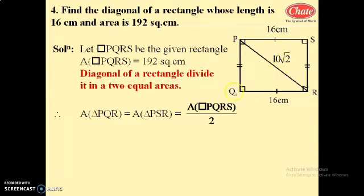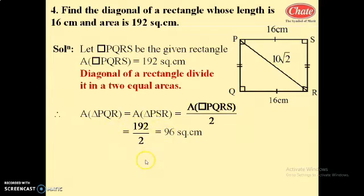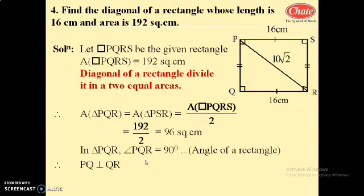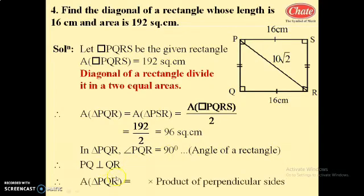Area of triangle PQR equals area of triangle PSR, each equals half of 192, which is 96 square centimeters. In triangle PQR, angle PQR equals 90 degrees since PQ is perpendicular to QR in a rectangle. Area of triangle PQR equals half into product of perpendicular sides, that is half into PQ into QR.